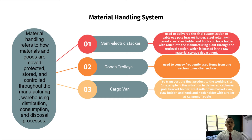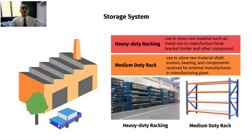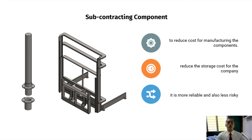The goods trolley is used to convey frequently used items from one section to another. The cargo band is used to transport the final product to the working site, for example to deliver cableway poles, bracket holders, steel rollers, twin basket claws, claw holders, and hook holders to Kampung Tobolo. For the storage system, we use two types: heavy duty racking to store raw metal materials, and medium duty racking to store shafts, screws, bearings, and components from external manufacturers. Some components — the pole and twin arm lifter frame — are subcontracted to reduce manufacturing and storage costs and improve reliability.